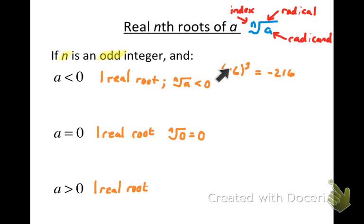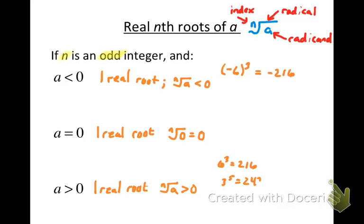When n is odd and a is negative, raising a negative number to that odd power gives a negative value, so we can always take the nth root of a negative number and get a negative result. If n is odd and a is positive, the nth root is positive. For example, six to the third power is 216, so the cube root of 216 is positive six. Similarly, three to the fifth power is 243, so the fifth root of 243 is three. When n is odd, the sign of the nth root matches the sign of the radicand.